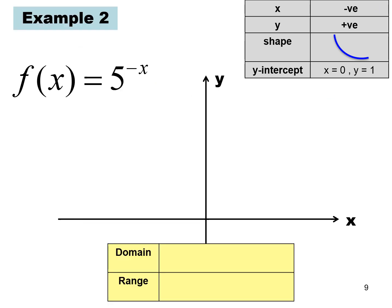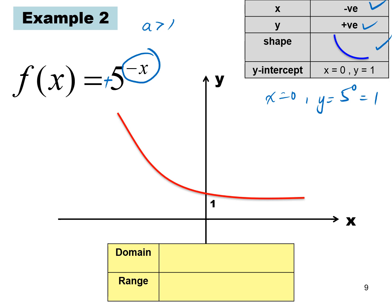For a graph where x is negative and y is positive — that is, when the base is between 0 and 1 — the shape falls to the right. The y-intercept is at a^0 = 1. The domain is (−∞, ∞) and the range is (0, ∞).